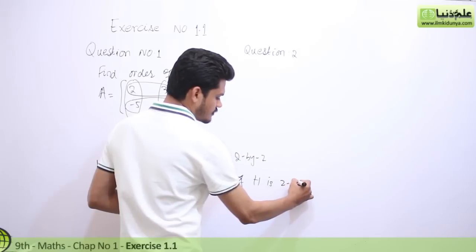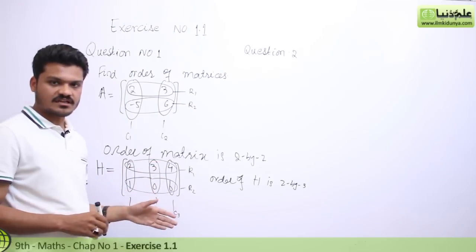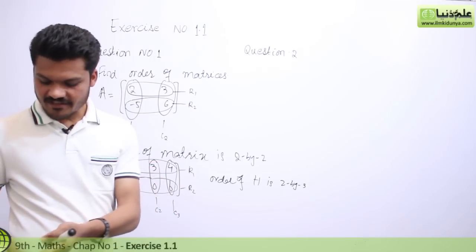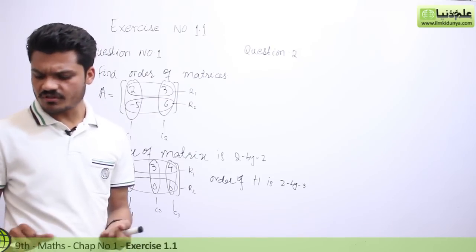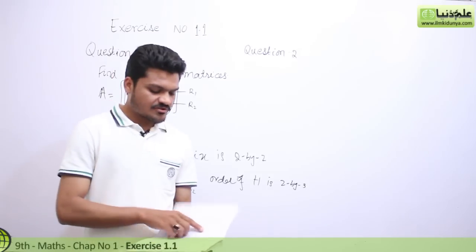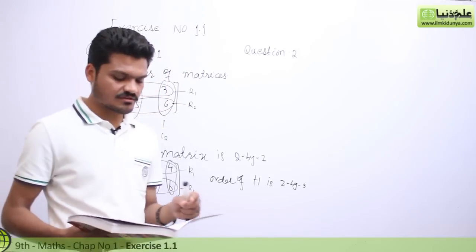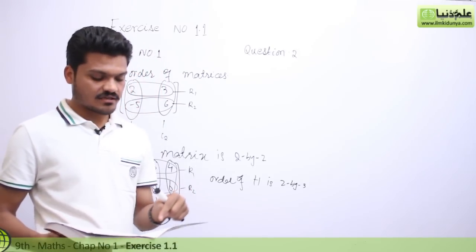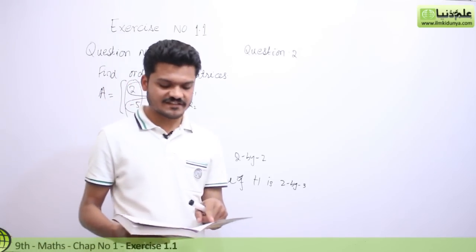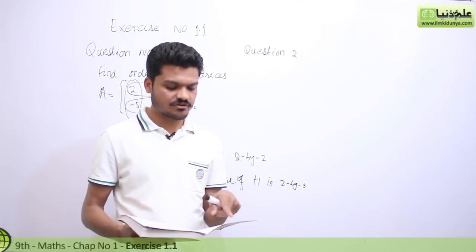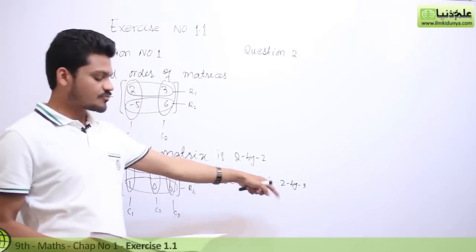This is all about the order of a matrix — it is easy to find. Matrix B has order 2 by 2 because it has 2 rows and 2 columns. Matrix C has 2 and 4 in the first row and 2 columns, so its order is 1 by 2. D has order 1 by 3. E is 2 by 3, F is 1 by 1, G is 3 by 3, and H is 2 by 3.